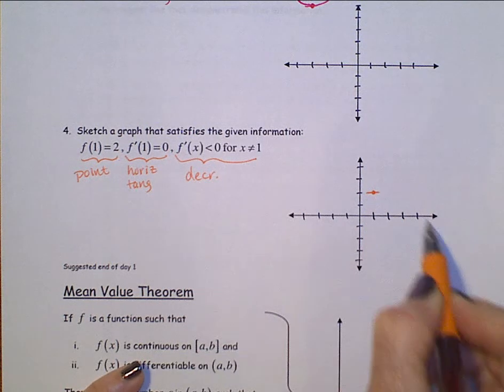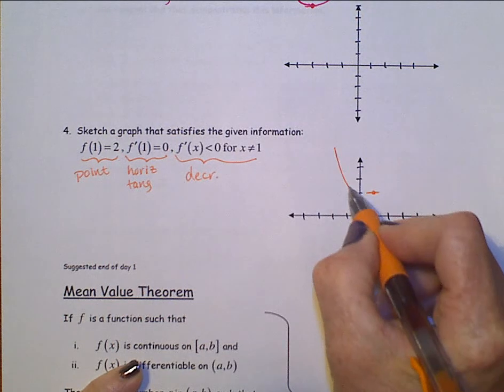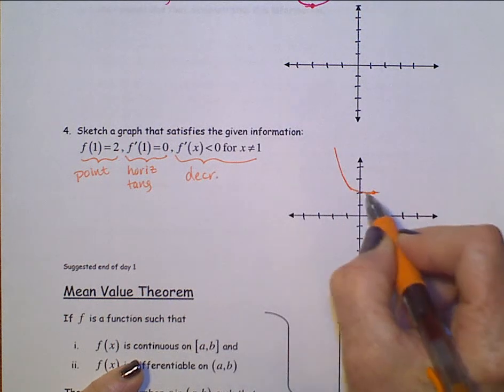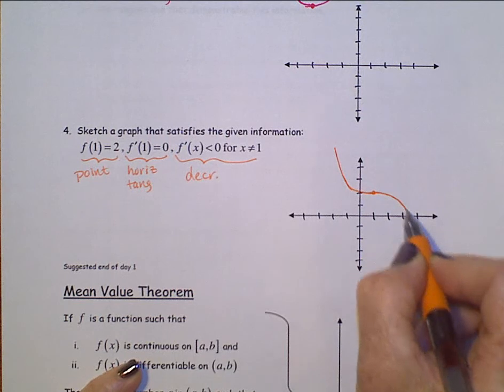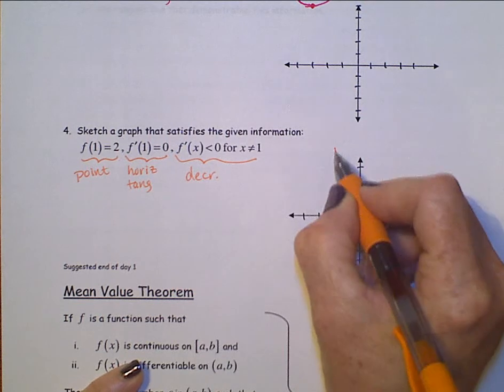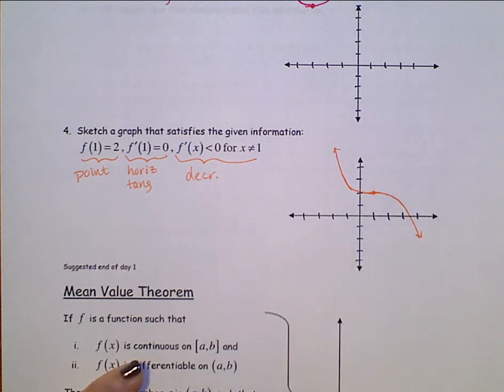So, we're going to have to go down this way. Come in here, flattening up, and then going that way. That function is always decreasing. All right.